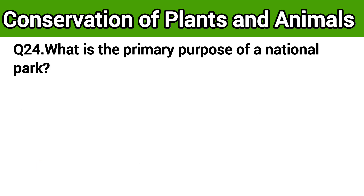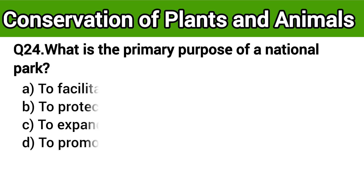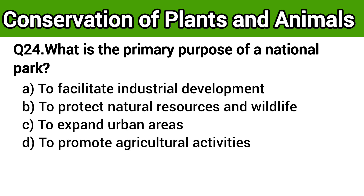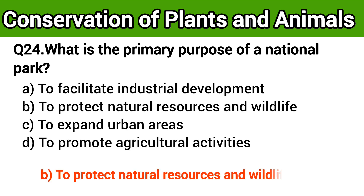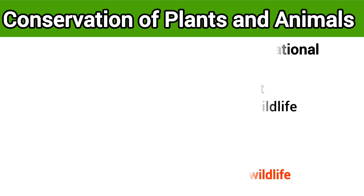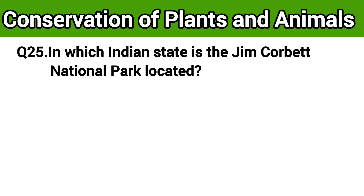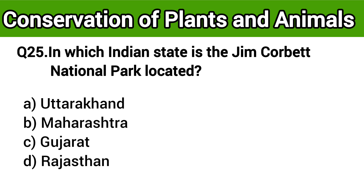Question number 24: What is the primary purpose of a national park? The right answer is option B: to protect natural resources and wildlife. Question number 25: In which Indian state is Jim Corbett National Park located? The right answer is option A: Uttarakhand.